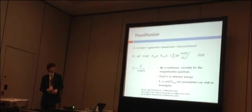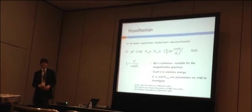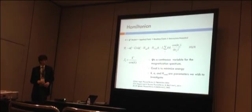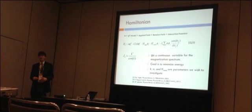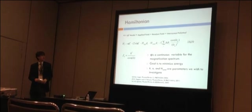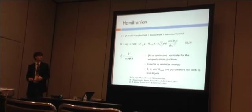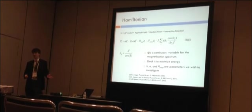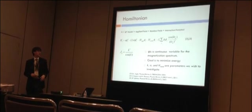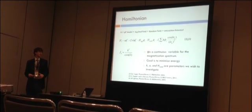So from this phi-fourth term we added other terms such as an applied field term so that we can make hysteresis loops. A random field term to break up symmetries and account for impurities in samples. And lastly and most importantly an interaction potential. The interaction potential we use is the RKKY potential. So it has the form of a decaying oscillation or a decaying cosine.